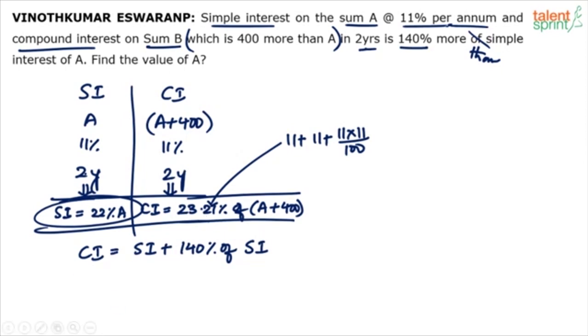Now substitute these two and find out solve for A. What happens? 23.21 percentage of A plus 400 equals to. See SI plus 140 percent of SI can be taken as 240 percentage of SI. This SI is nothing but 100 percentage. 100 percentage plus 140 percentage is 240 percentage. So 240 percentage of SI. What is that SI? SI is 22 percentage of A. Solve for A. Only one equation and one variable. Solve and you will get the answer.